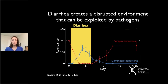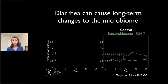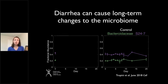We also found that diarrhea can cause long-term changes to the microbiome. Here I'll focus on two really abundant gut bacteria. One of the things we can do in these animal models is use microbiota from human patients, so that we can study how specific human bacteria are going to be affected by these different perturbations.